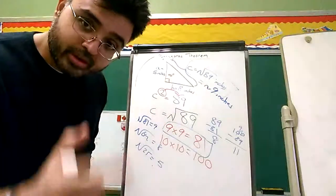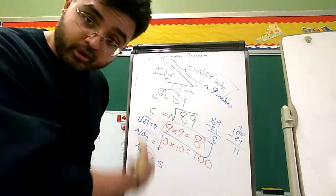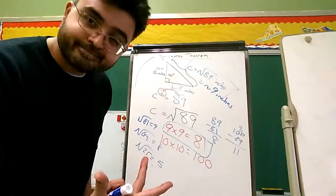So remember, A squared plus B squared equals C squared. Okay? Follow these steps, and you always get it right. Thank you.